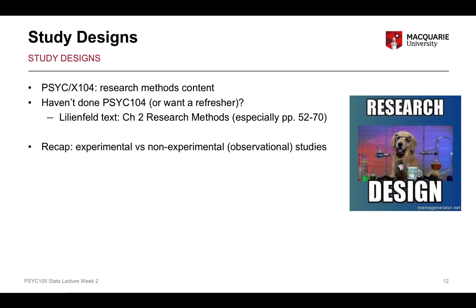The biggest distinction between different kinds of designs is between an experimental design and a non-experimental design. A non-experimental design is called an observational study. An experimental design is a type of study where the researcher has power to allocate participants to different conditions of an independent variable — to allocate people to different groups or conditions. In a non-experimental study, the researcher doesn't have that power — that experimental control.